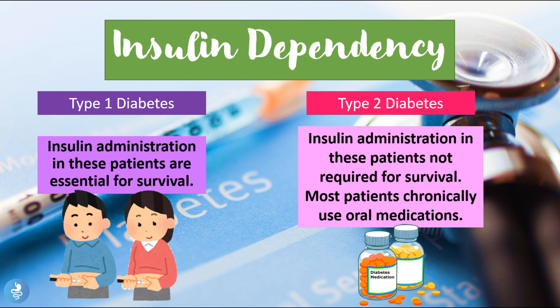Regarding insulin dependency: in type 1 diabetes insulin administration in these patients is not required for survival and most patients are treated chronically with the use of oral medications. They can however, after a while, be treated with insulin administration, but usually for the majority of their lifespan these patients can be treated with oral glucose medications.